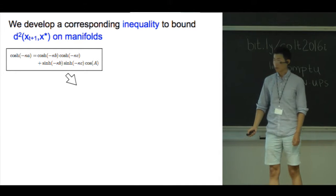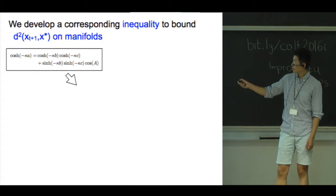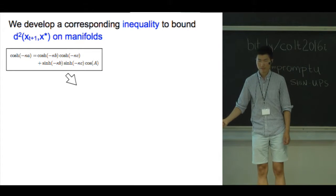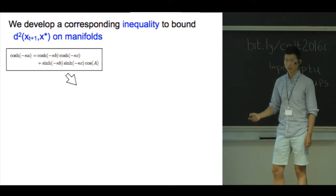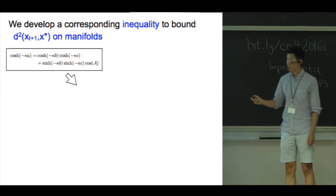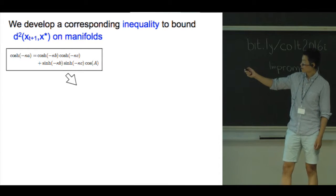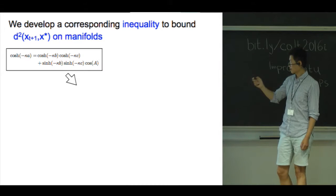Instead, we have the hyperbolic law of cosines or the spherical law of cosines for spaces of constant curvature. But even in this very restricted setting, it is not obvious at all how to get a meaningful upper bound on the squared distance.